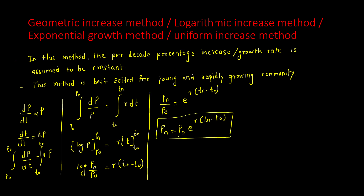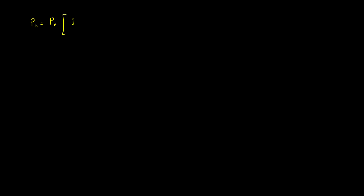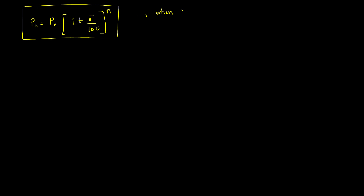One important point to remember: this formula (Formula A) — Pₙ = P₀ · e^[R(tₙ − t₀)] — is used when the R value is given directly in the problem. If R is given, use Formula A.